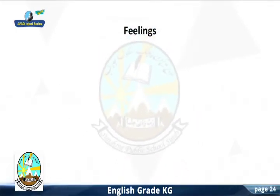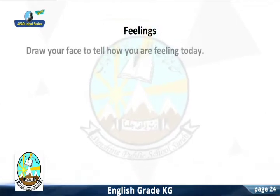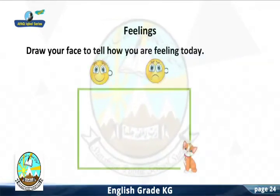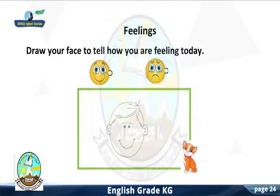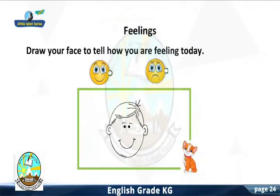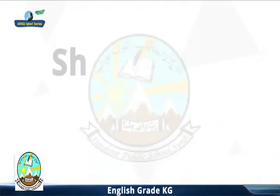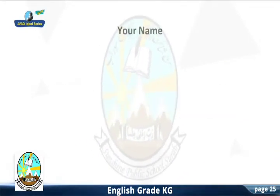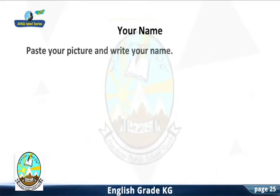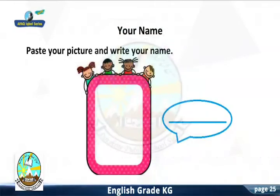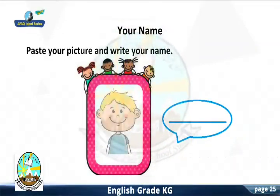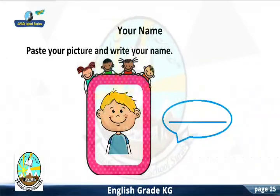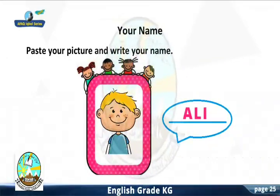Sheet Number 17 Topic: Feelings. Draw your face to show how you are feeling today. Very good. Sheet Number 18 Topic: Your Name. Paste your picture and write your name. Very good.